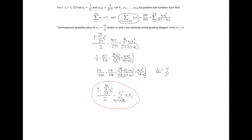Since we can pull the constant 2 outside the sum, it cancels with the one-half, giving us 1 over 215. So now we have: 1/215 = summation from i=1 to 216 of x_i² / (1 - a_i).